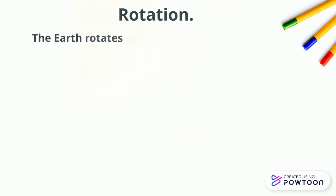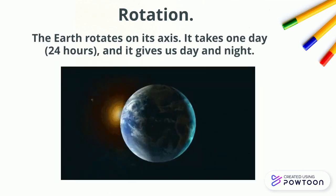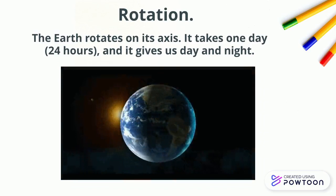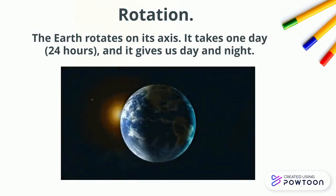Let's start with rotation now. The Earth rotates on its axis. It takes one day, 24 hours, and it gives us day and night. Here you are an image where you can see the Earth rotating on its axis.